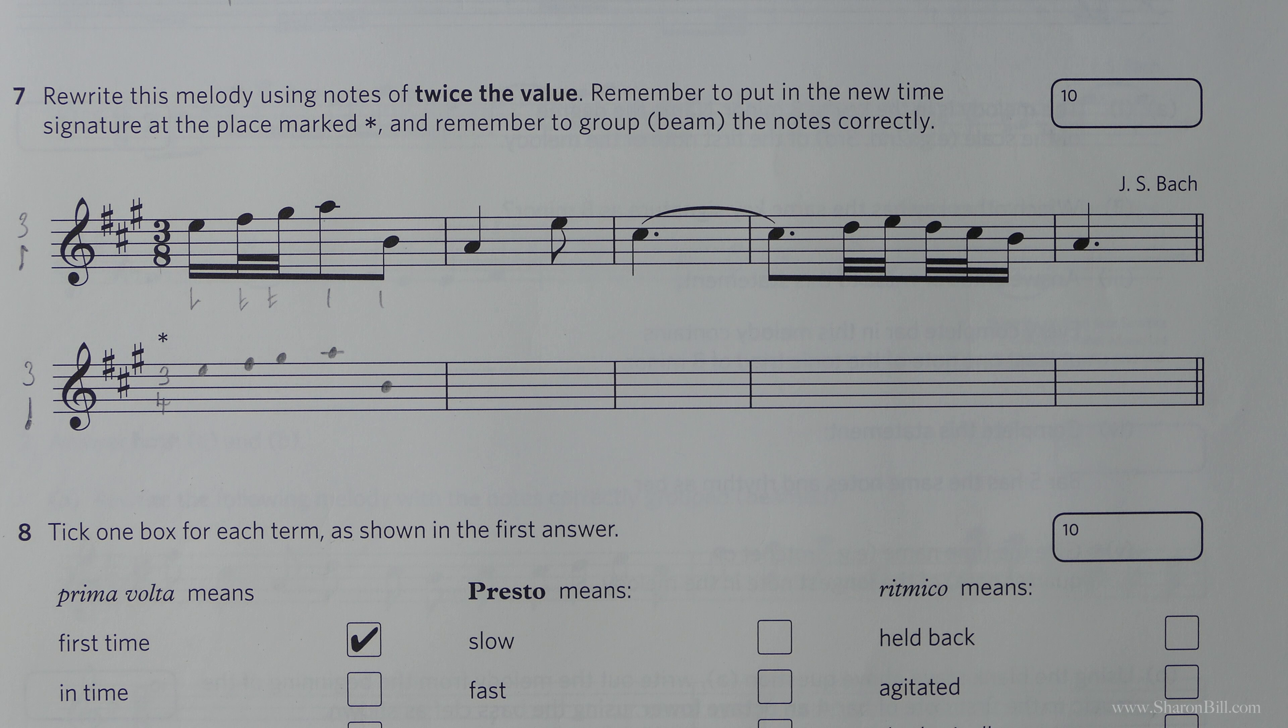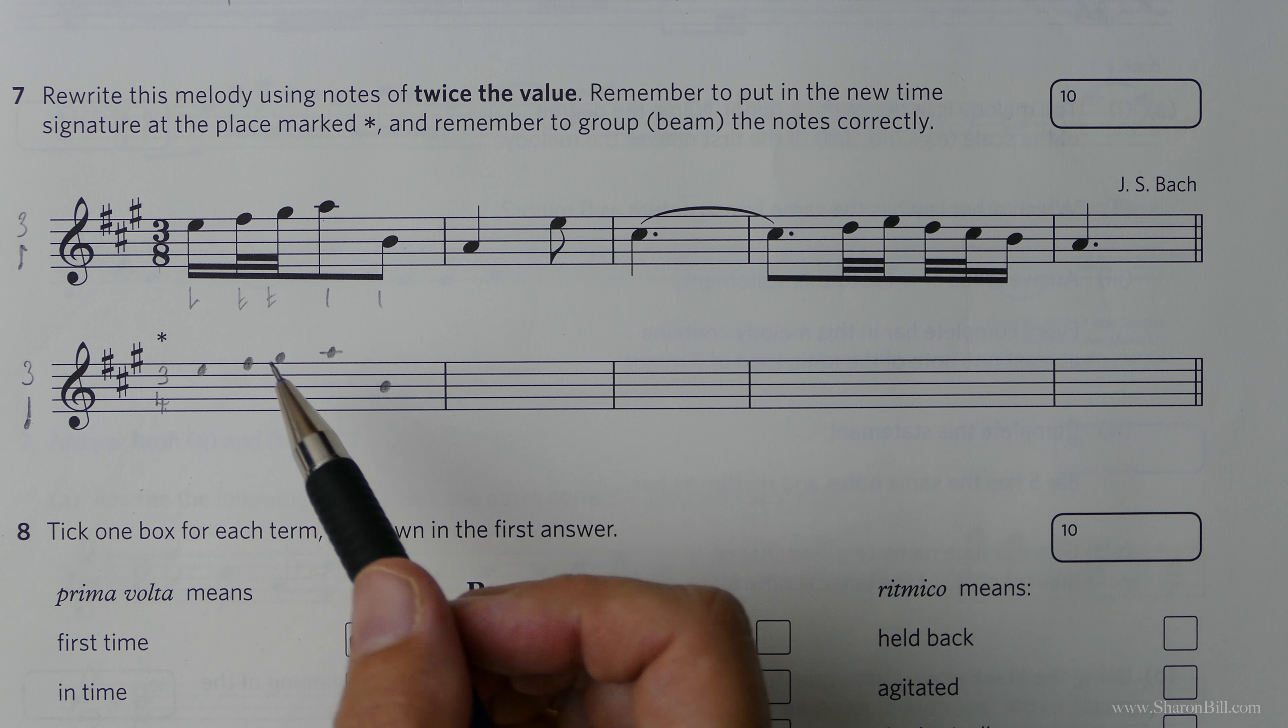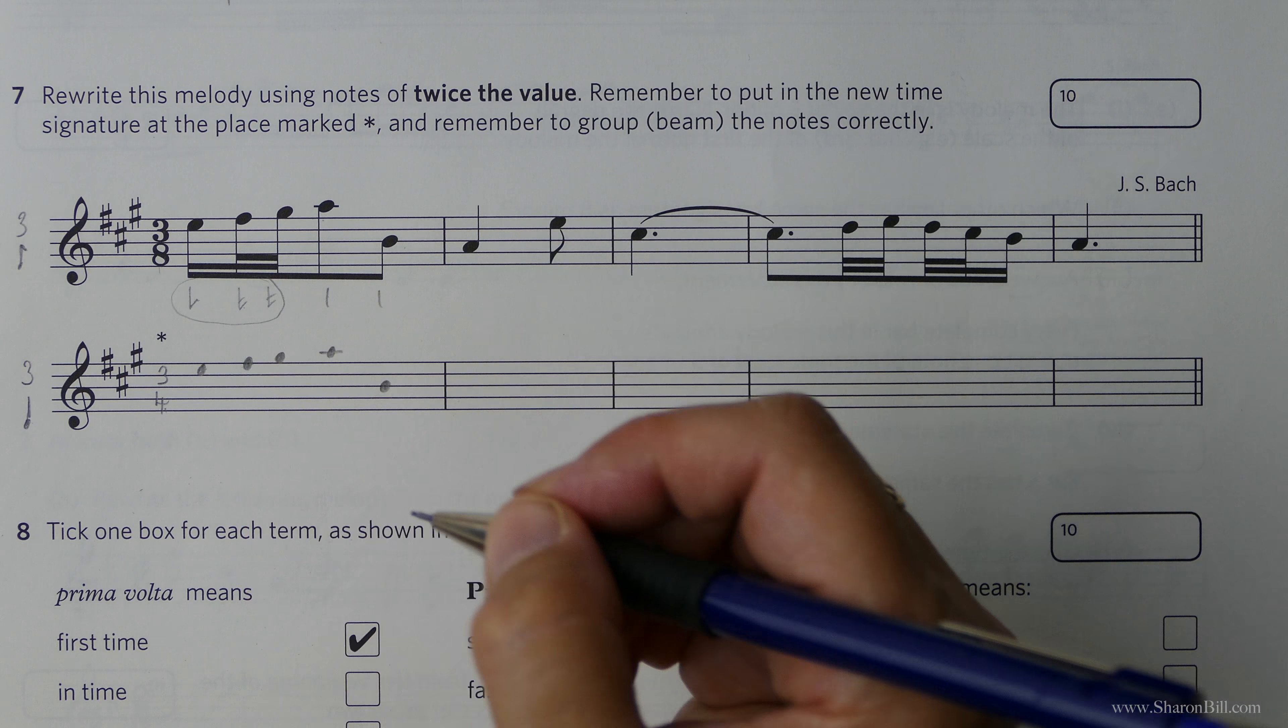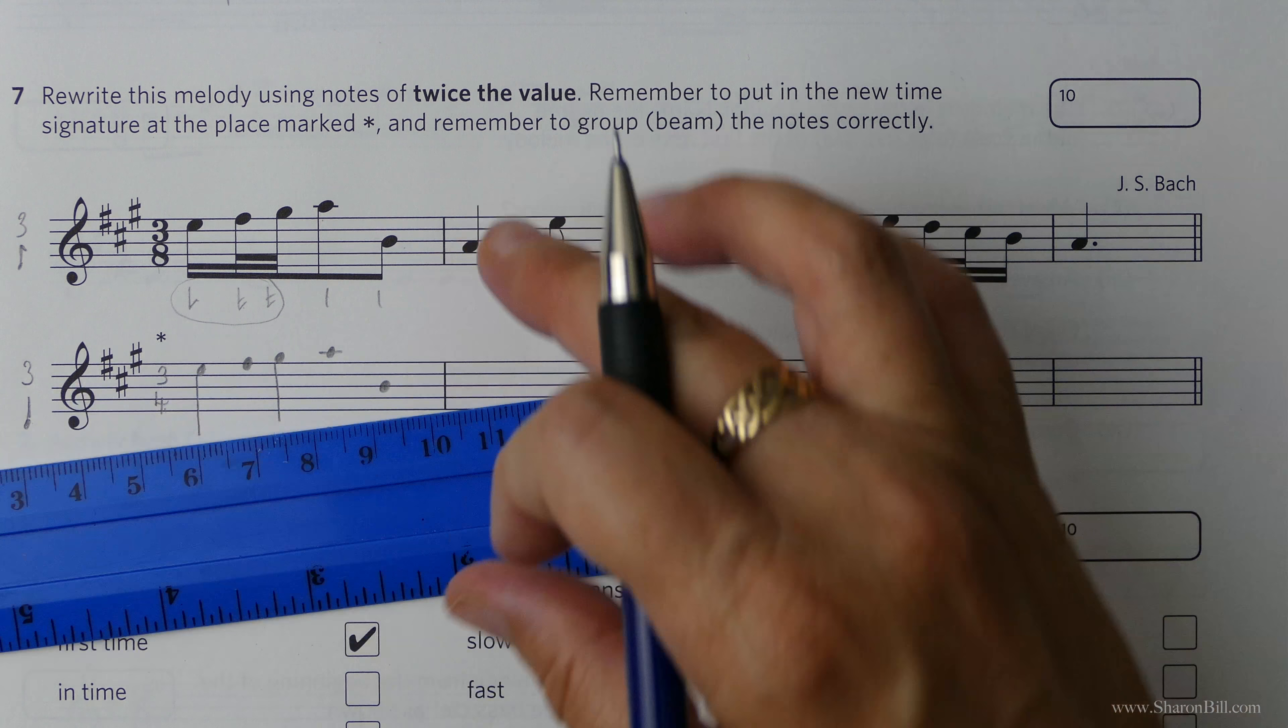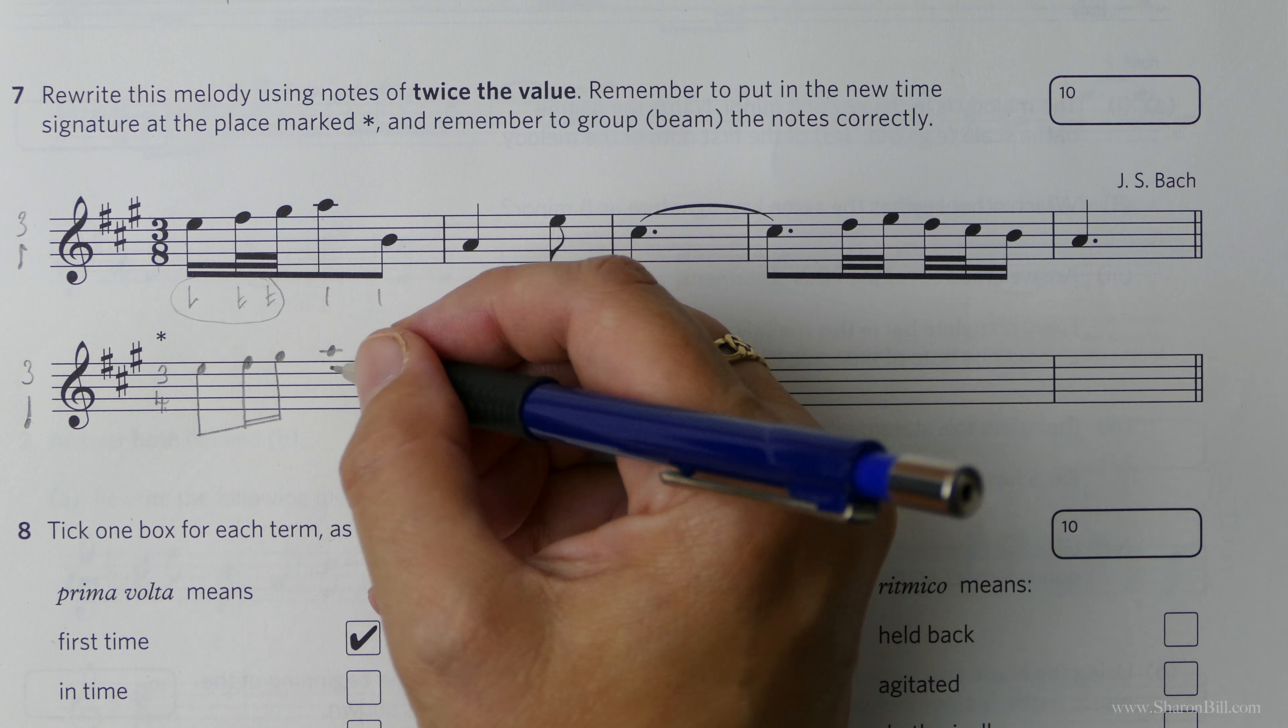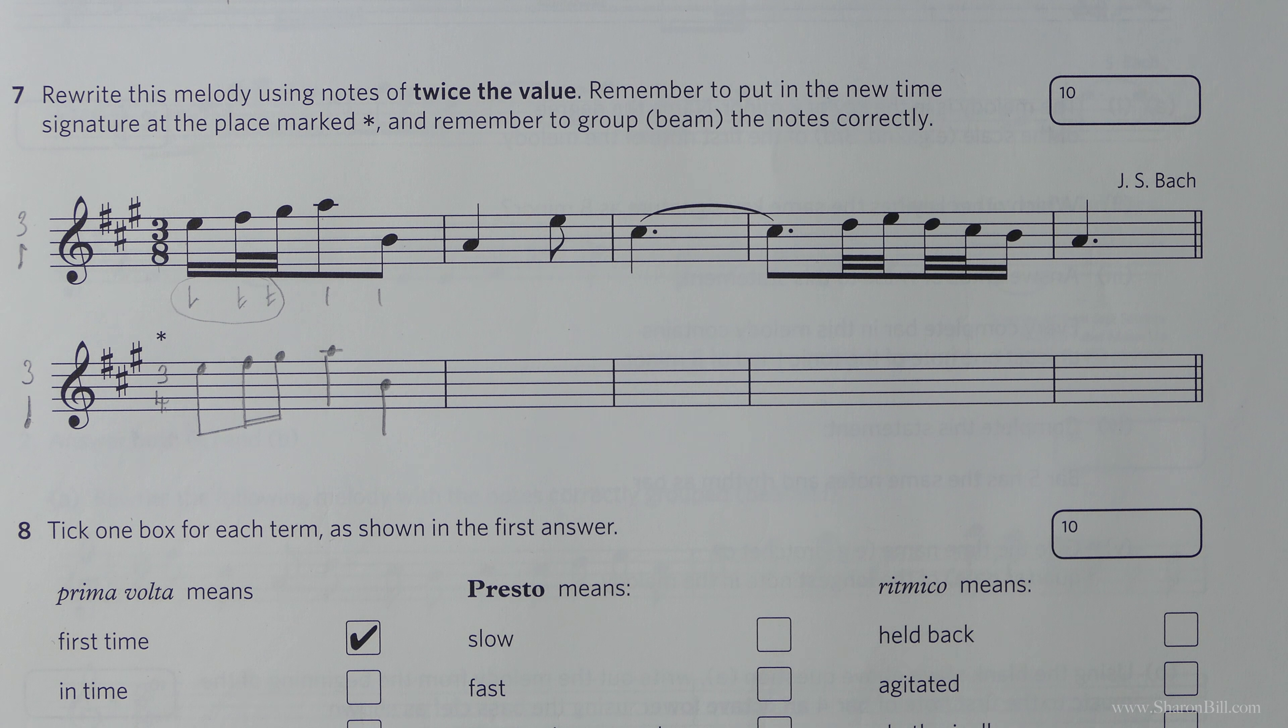We're now counting in crotchet beats or quarter notes, and we have to beam accordingly to show each group. Half a beat and two quarters of a beat give us a whole beat, so they need to be beamed together. We're beaming in quarter notes or crotchet beat groups, and following all of the rules that apply there. These are now crotchet beats or quarter notes, so they don't need beaming at all now.